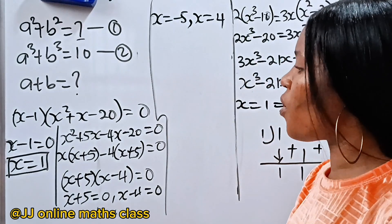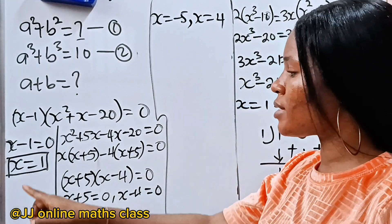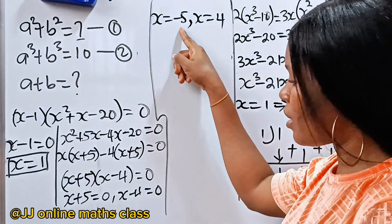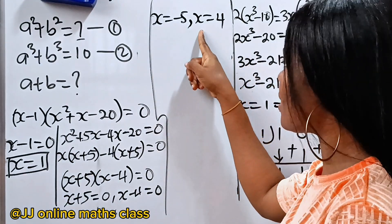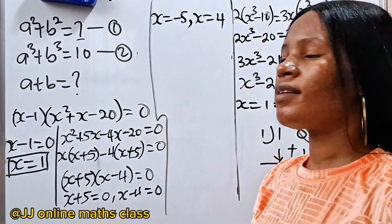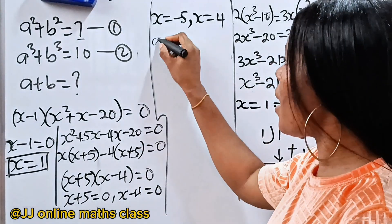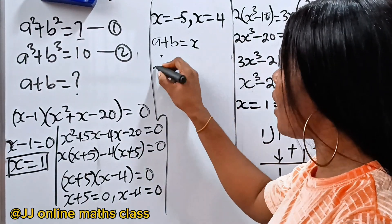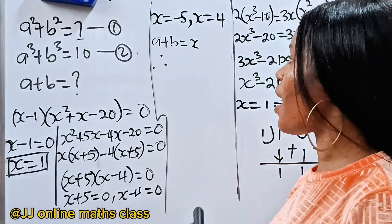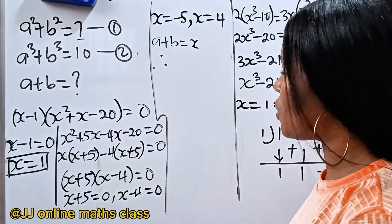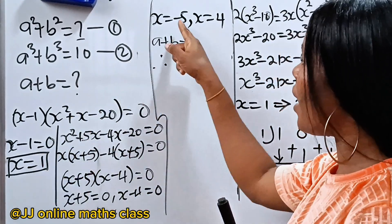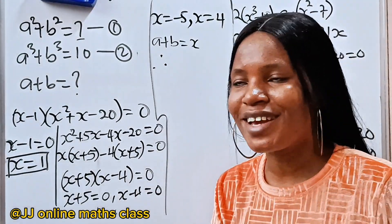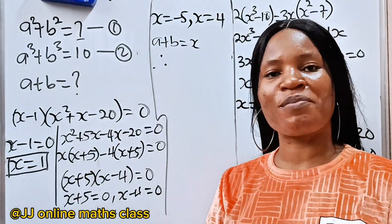We now have three values for x: x equals 1, x equals minus 5, and x equals 4. Since a plus b equals x, these are the three possible values of a plus b. Thank you so much for watching, and have a beautiful day. Bye.